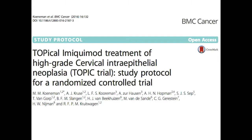Besides the skin, imiquimod has been used against cervical intraepithelial neoplasia. More recently, trials are looking at imiquimod in cervical cancer together with systemic vaccines using what's called a prime-and-pull methodology: you induce the T-cell response systemically using HPV vaccines, then apply imiquimod locally to induce antigen presentation from the tumor to those primed T-cells, drawing them to the cervix.